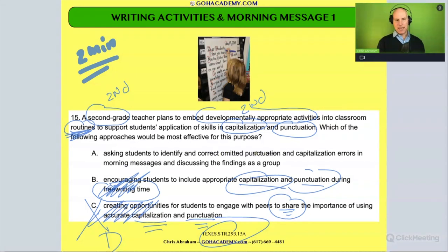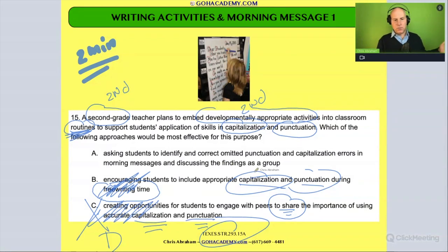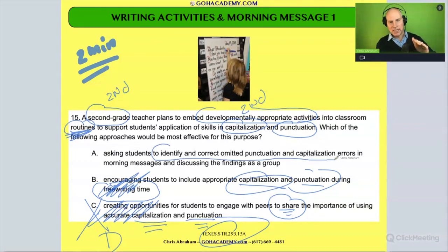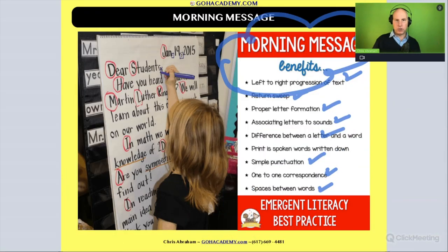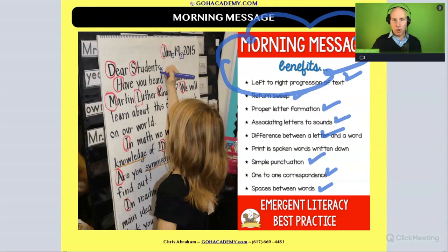Option A says: 'ask students to identify and correct omitted punctuation and capitalization errors in morning message and discuss their findings as a group.' Team, doesn't that sound right? That's exactly what you do — that's one of the things you do in morning message for a second grade class. It is grade appropriate. In second grade, you're working on building your writing fluency.